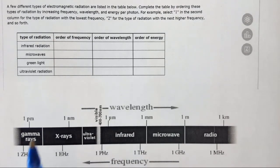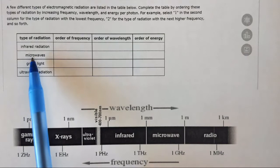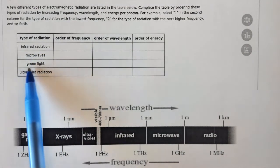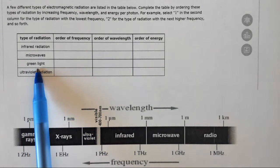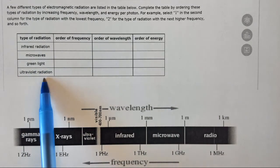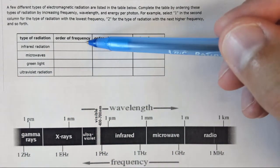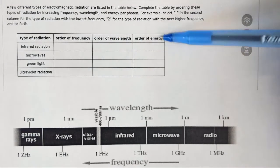In this question we're asked to rank some types of electromagnetic radiation: infrared radiation, microwaves, green light which is a form of visible light, and ultraviolet radiation in terms of order of frequency, wavelength, and energy.